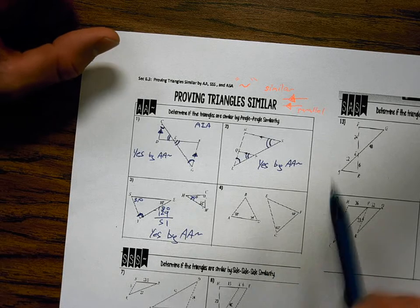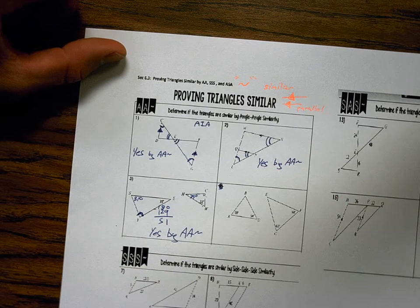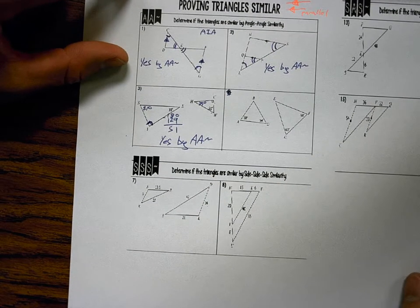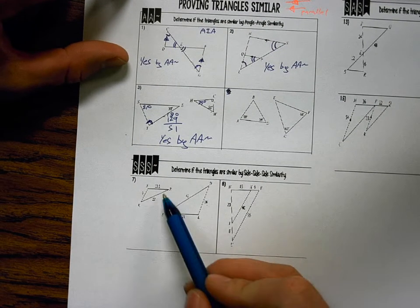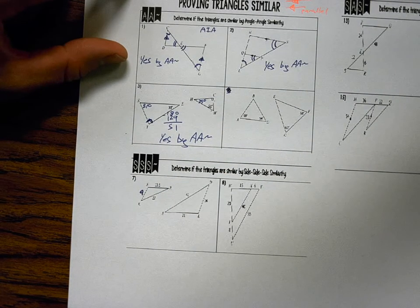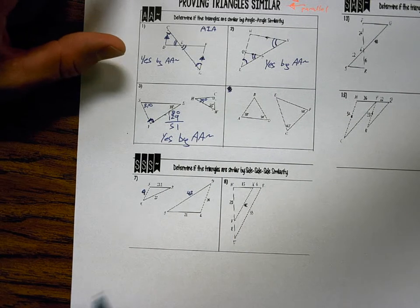Okay, we're going to skip number four because those numbers are too faded. Okay, number seven. This is a nine. You can't see it. This is a 42. And a 14.